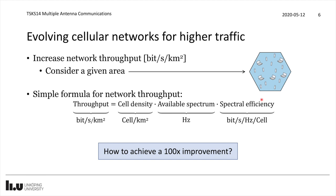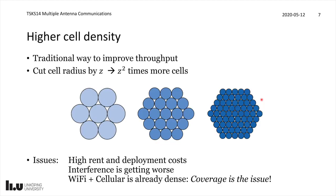When it comes to cell density, this is actually a traditional way of improving the throughput of cellular networks. We have gone from having many kilometers between different base station towers to just a few hundred meters in urban areas. The issue with increasing cell density is that if we cut the cell radius by a factor, then we need that factor squared in more cells, because we are deploying them over a two-dimensional area. So it grows in a quadratic manner as we reduce cell size.